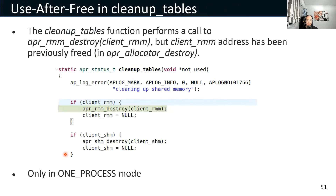The third vulnerability is a use-after-free in the cleanup_tables function. This function calls rmm_destroy, but the memory has already been previously freed by APR_allocator_destroy. So we are trying to access an address that is no longer valid, leading to a use-after-free. It's important to note that this vulnerability can only be triggered in one-process mode.